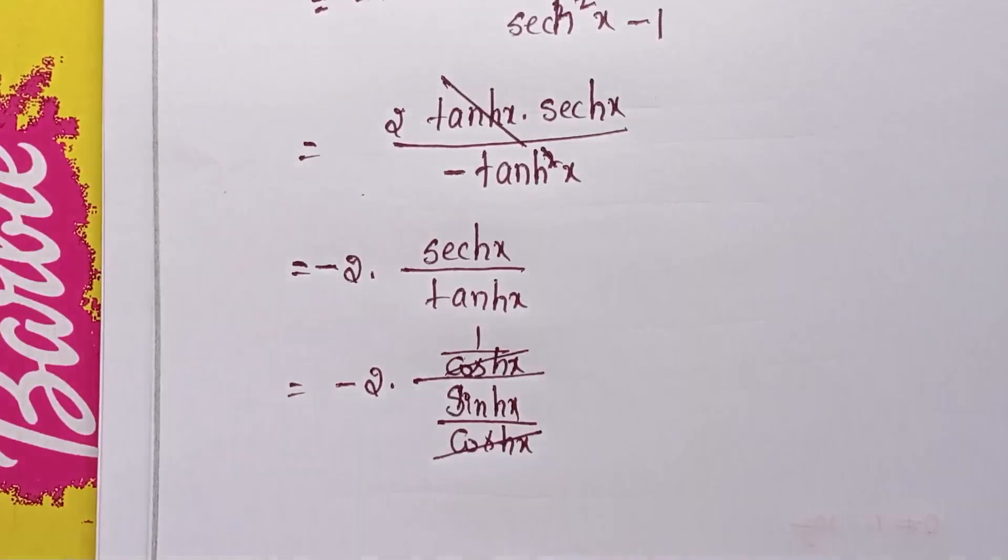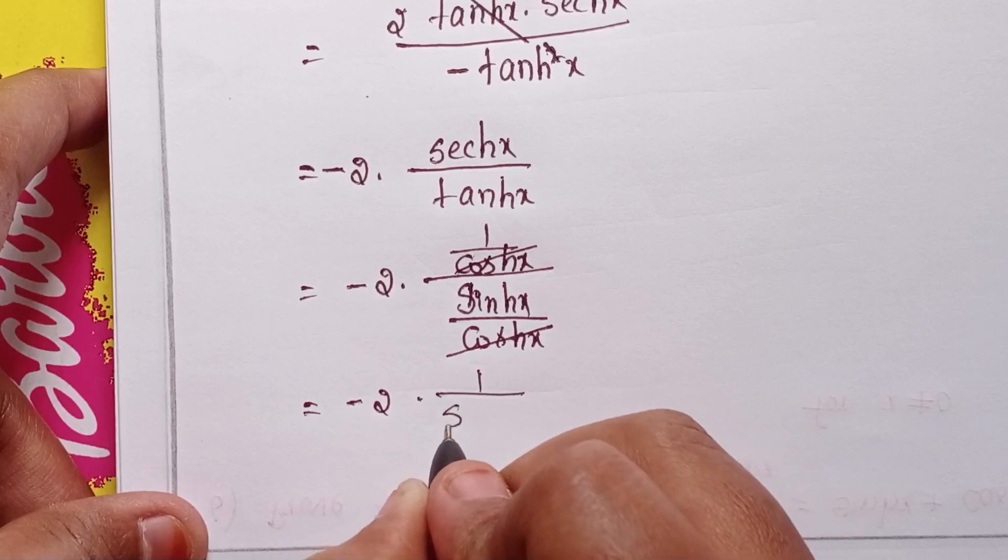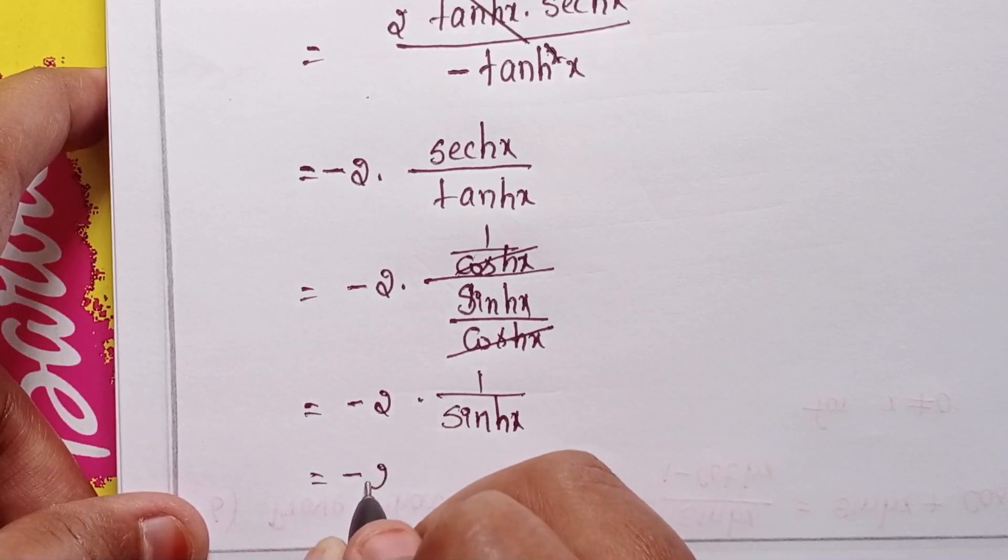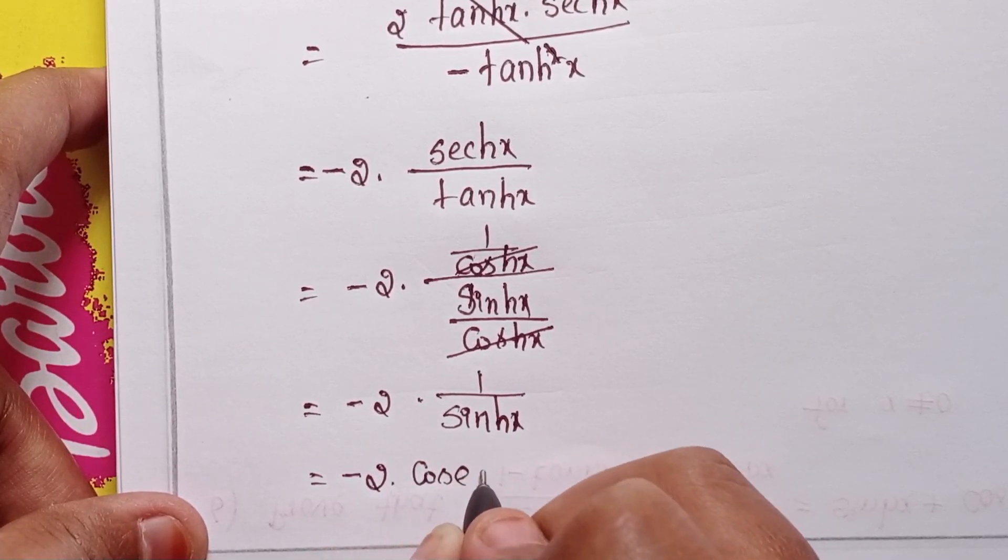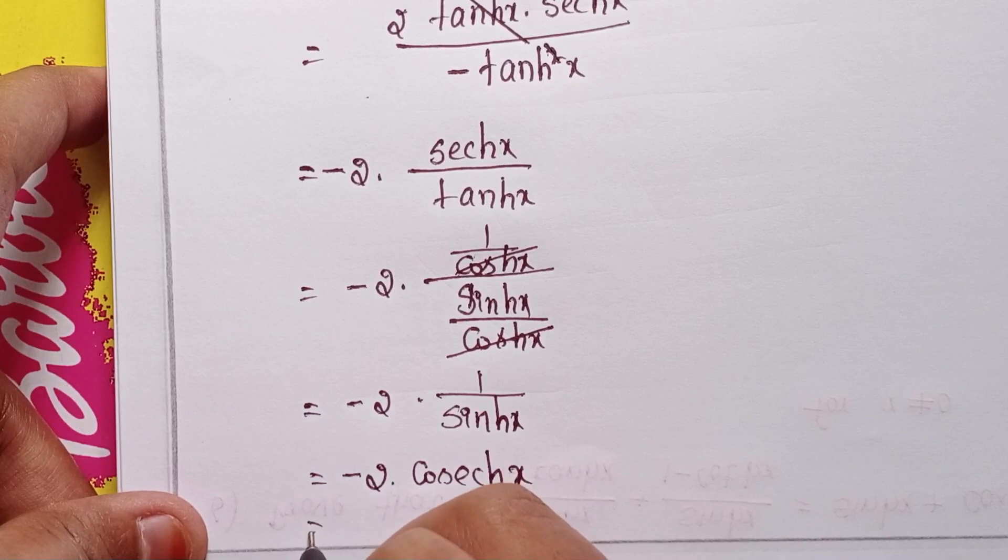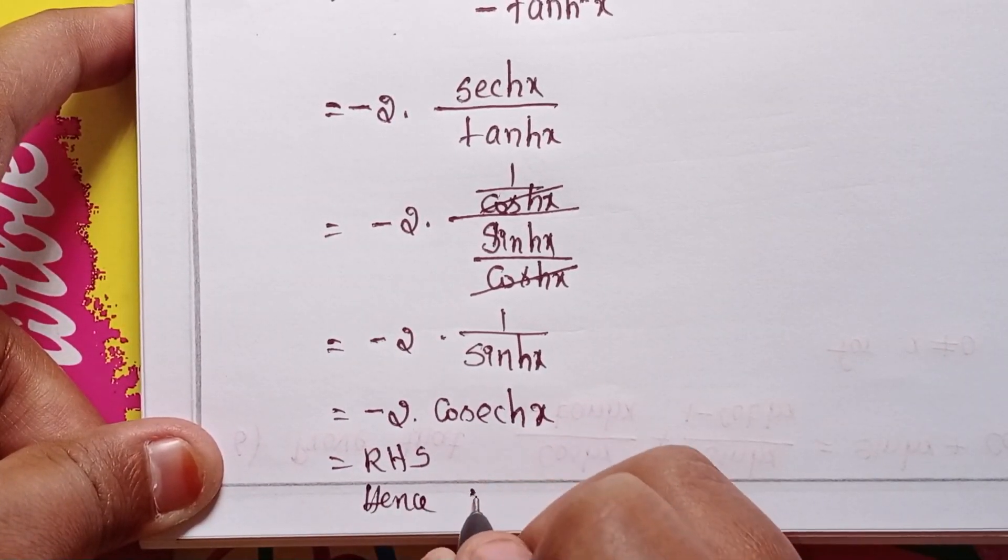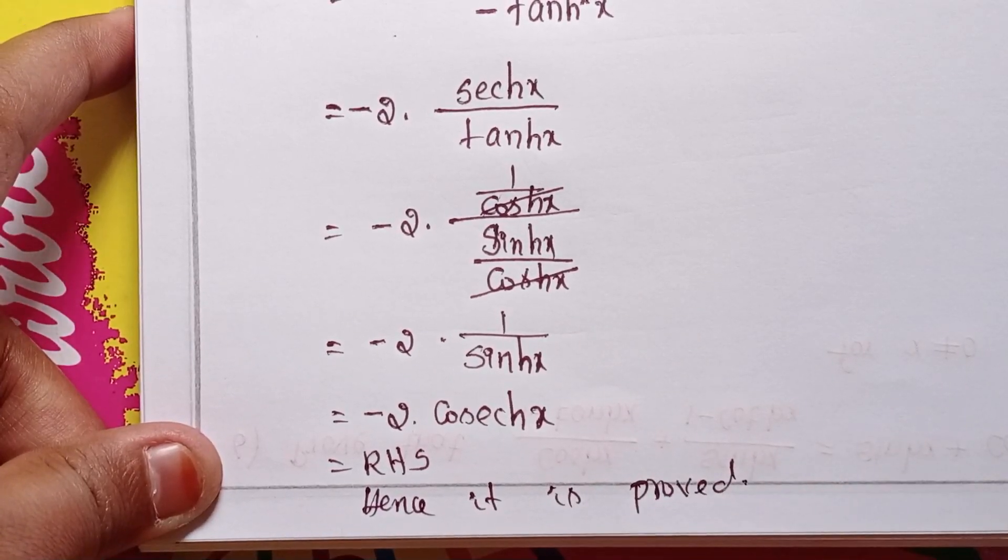Cosh x cancels, giving minus 2 times sech x. This is RHS, hence it is proved. So this is question number 5 solution.